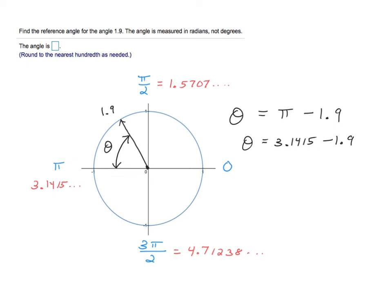So if I do that in my calculator, 3.1415 minus 1.9, I'm getting roughly 1.2415 radians.